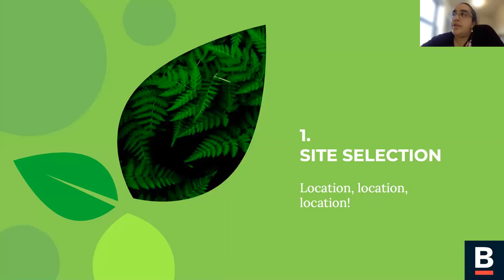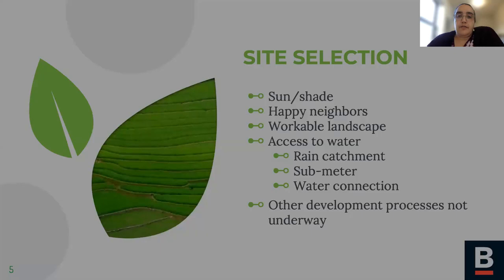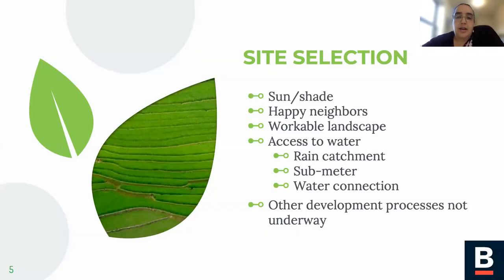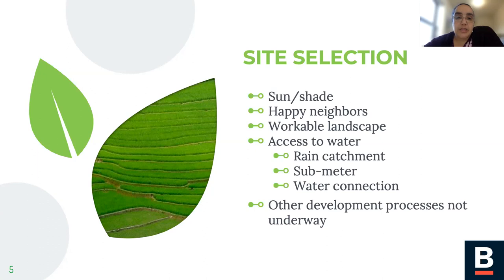There are multiple factors that go into finding a good site for a garden. Some of those have nothing to do with my department or my program. Sun and shade is a factor. You want to make sure neighbors are excited to have a garden. You want to make sure the landscape is good — it's really hard to start a garden on a very ledgy, sloped parcel. But if you find something that's flat, in the sun, and the neighbors are excited about it, that's a really good possible site for a community garden.